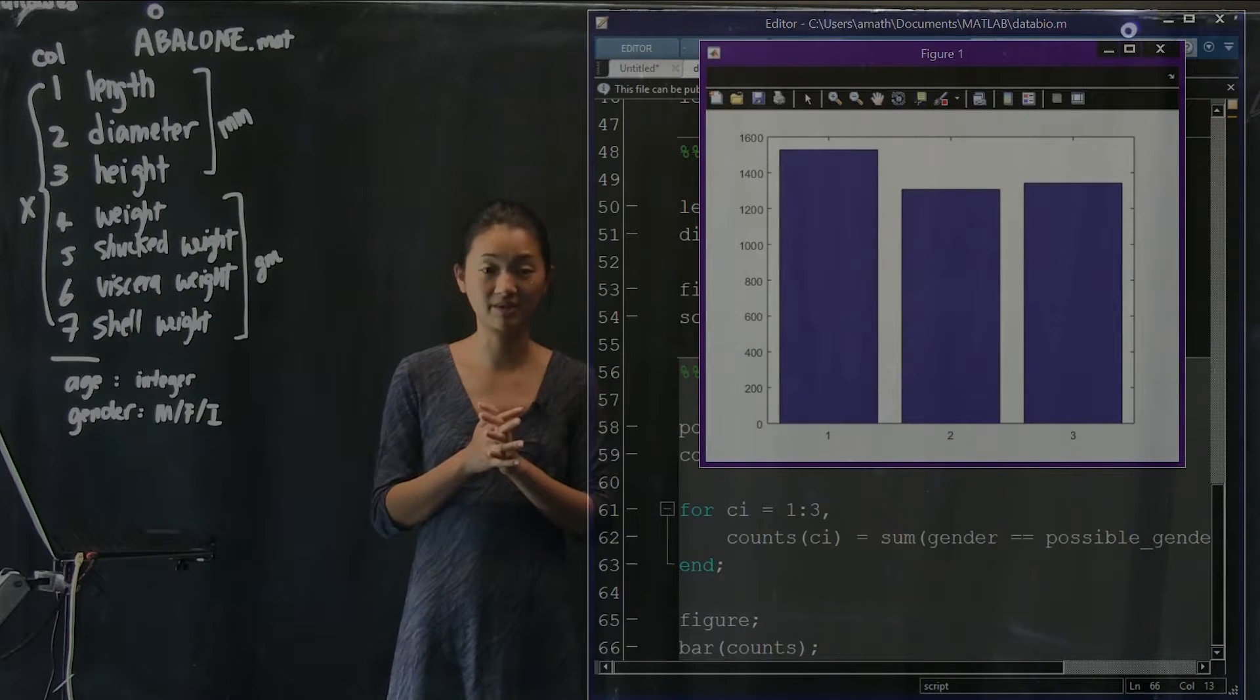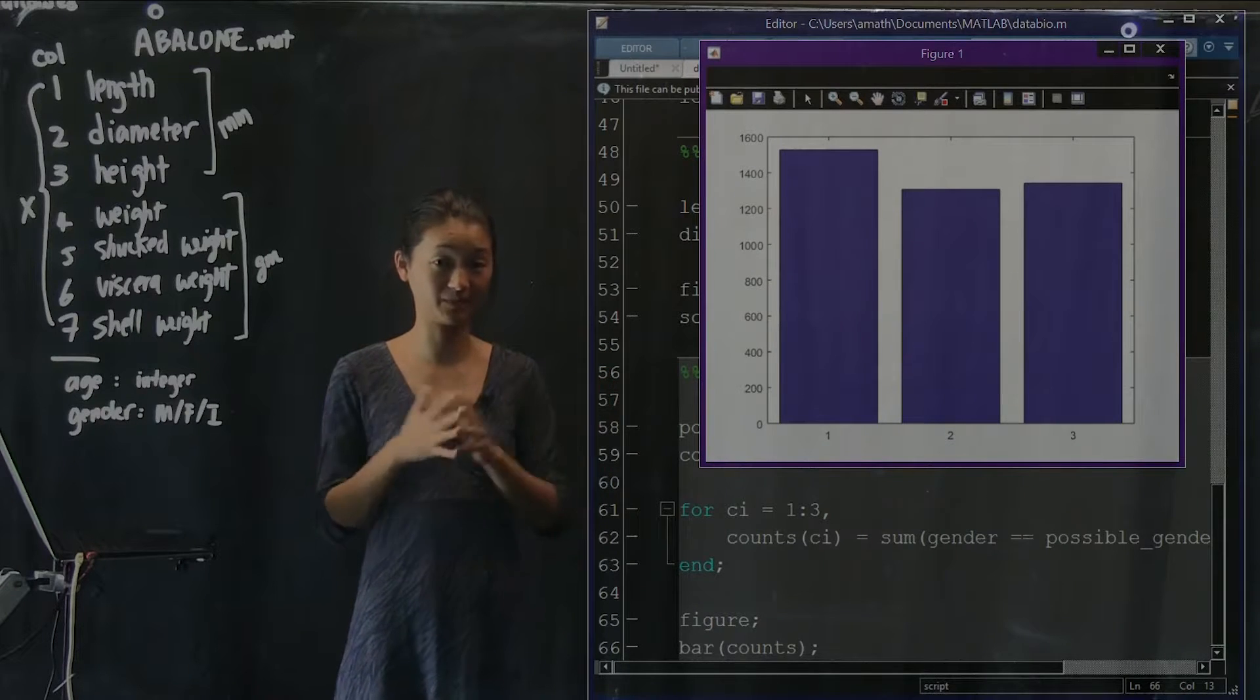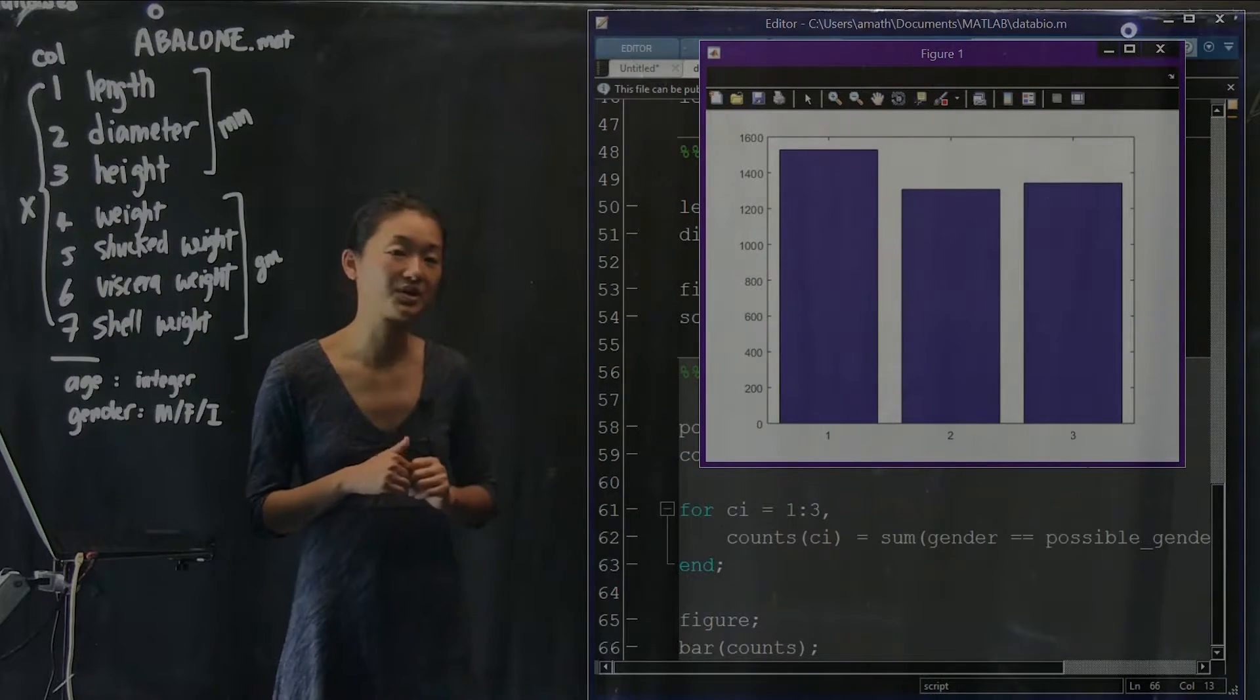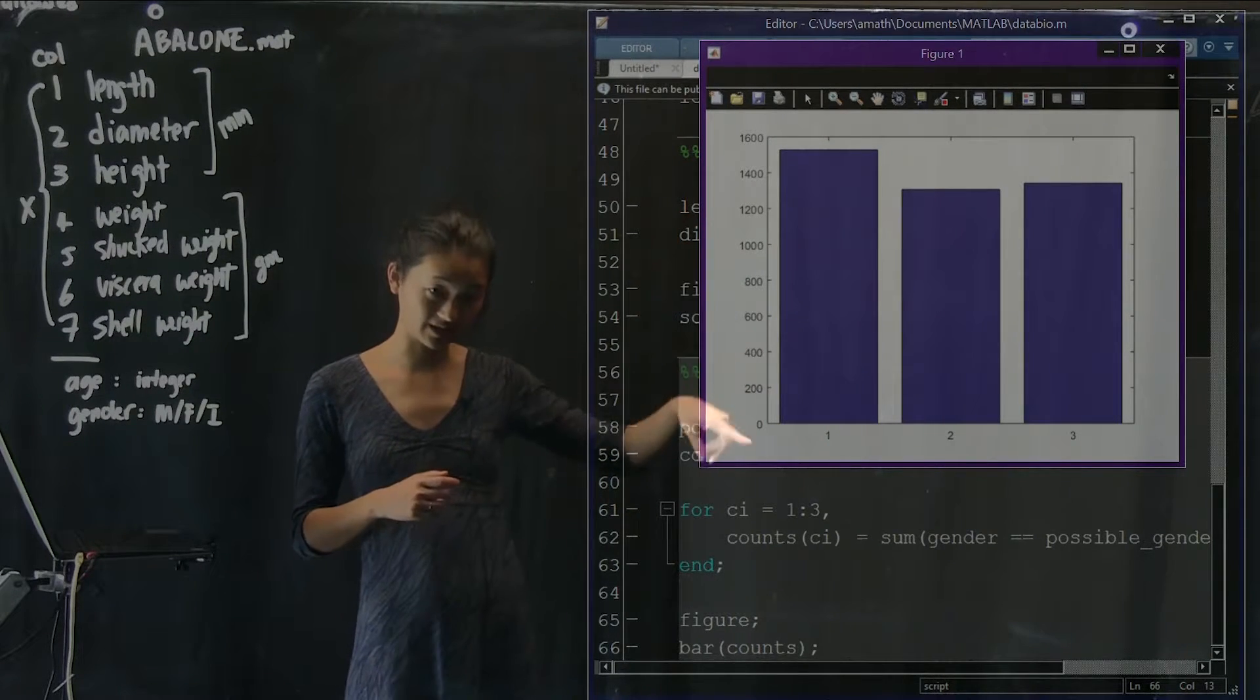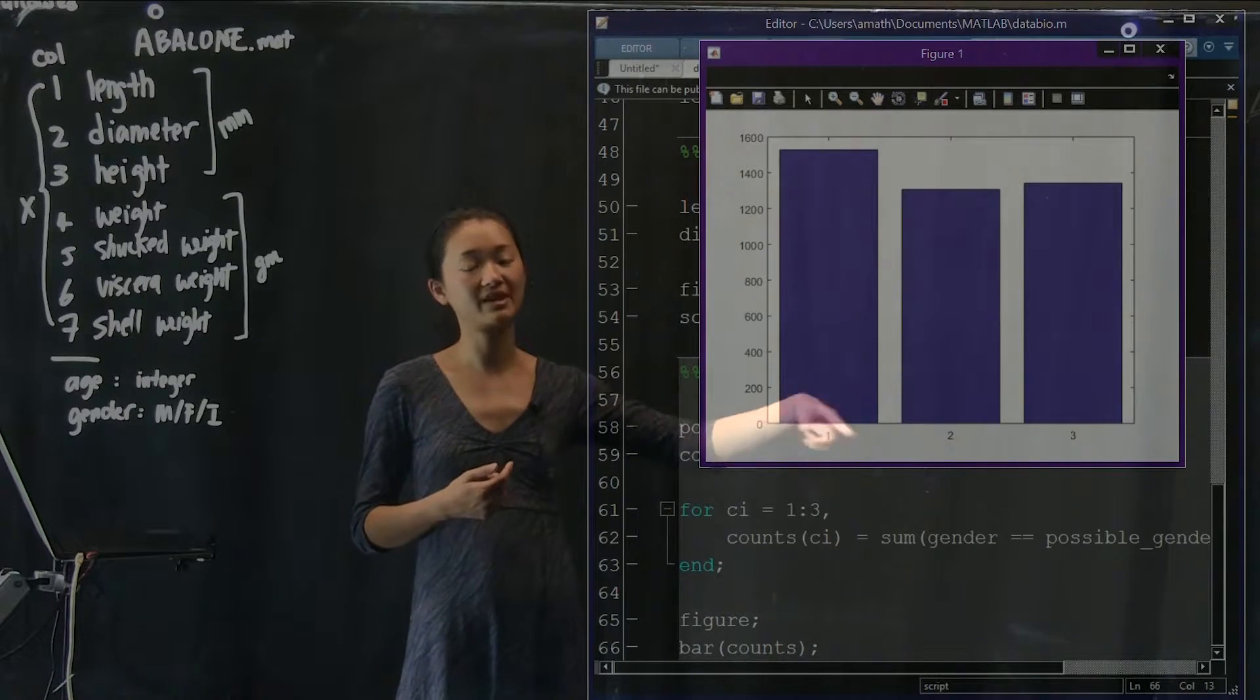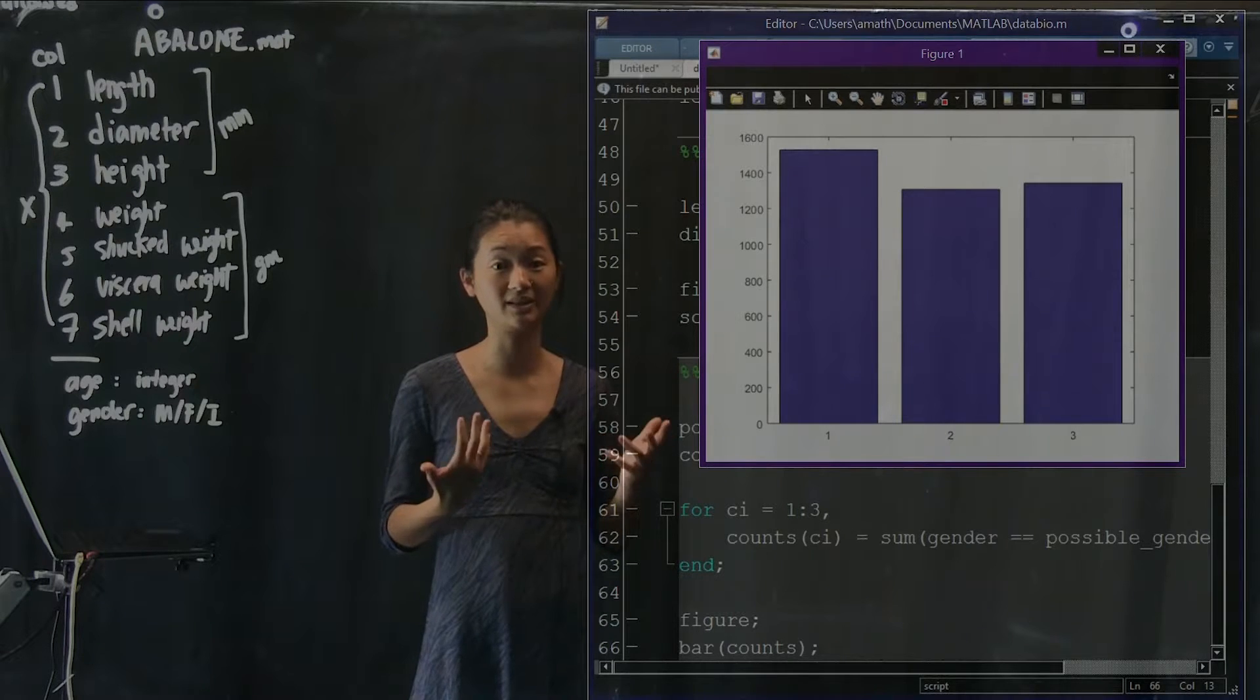But I'm going to show you something that's kind of useful in this particular case, which is that I just want to label my bar plot. You guys can figure out how to change the colors and make it look prettier later. Specifically, what we're going to do is the vertical axis is number of individuals. We can label it that. But right now, the horizontal axis is 1, 2, and 3, which doesn't really make any sense.